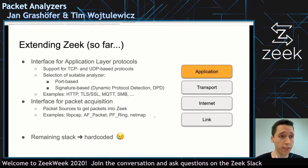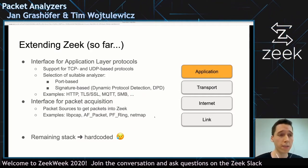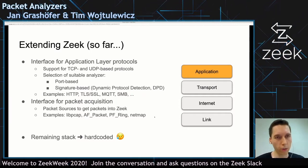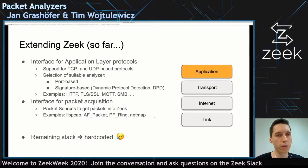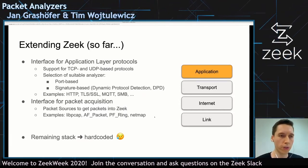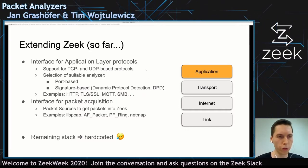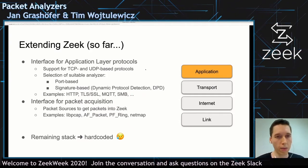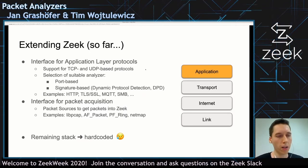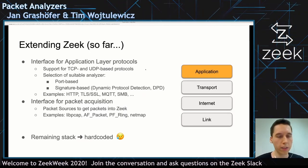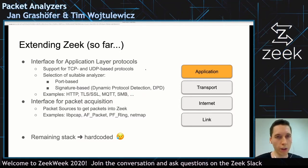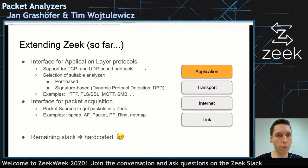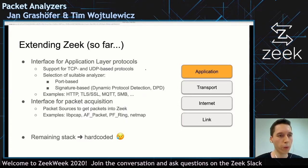Then there's another interface you can use — that's an interface for packet acquisition, the packet sources interface. You can write a packet source plugin and that allows you to define how the packets should go into Zeek. Usually, for example, if you just analyze PCAPs, you will use something like libpcap to get the packets into Zeek, but there are other libraries and interfaces like AF packet, PF ring, or netmap. The advantage of these is usually that they come with load balancing, so you can set up your own machine cluster using these technologies.